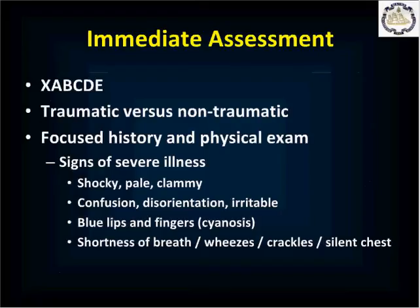The following are typical signs of severe illness. The patient may be shocky — pale, clammy, confused, disoriented, or irritable — from insufficient blood flow to the brain. They may have blue lips and fingers, called cyanosis, indicating not enough oxygen in the bloodstream. If there is obvious respiratory distress, you may hear wheezing, crackles, or nothing at all when they try to breathe — all very significant signs of severe illness.